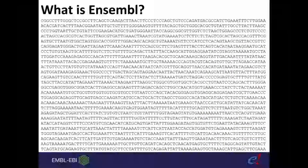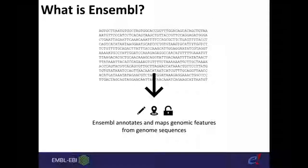Ensembl is a genome browser. We import already sequenced and assembled genomes from publicly available repositories into our database, then run our own analysis pipelines on them and make them available for browsing on our web database and via our APIs. We take these sequences and add our own annotation, including in-house automatic gene and transcript annotations, and for human and mouse we also support regulatory feature annotations imported from databases such as ENCODE.